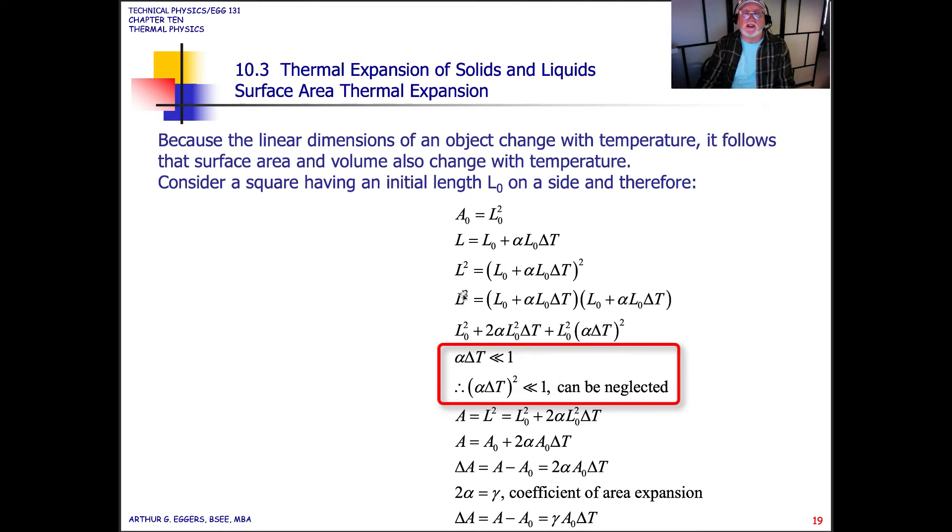So now we can say, since L-squared is equal to A, just where we started, the area, then L-squared-naught plus two times the coefficient times L-squared-naught delta T, we can start moving and replacing our relationships. The area is equal to area initial plus two times alpha area initial delta T. So the change in the area, then, is equal to the final minus the initial, and that will equal two alpha area-naught delta T. Two times alpha, then, we will redefine now as the coefficient of area expansion.